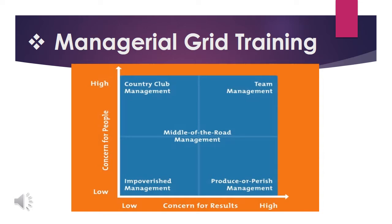The grid is based on two behavioral dimensions: concern for people on the Y-axis, and concern for results on the X-axis. Concern for people means highly prioritizing the needs, interests, and personal development of team members. Concern for results means emphasizing the efficiency and productivity of the team.